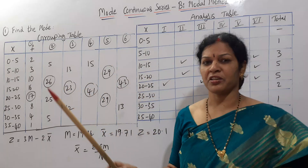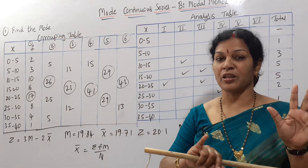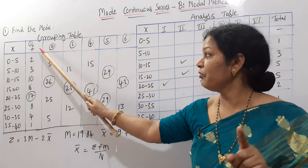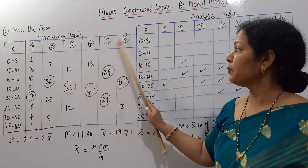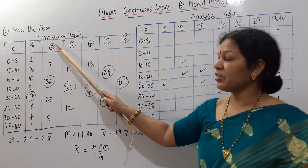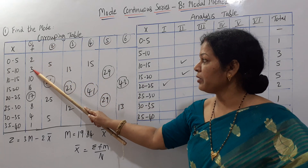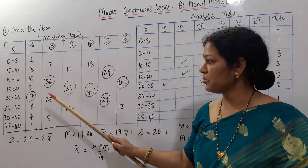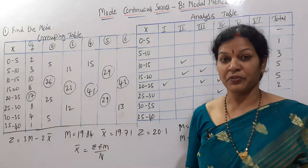We need to recap. The grouping table has only 6 columns. The frequency itself is the first column. We need to prepare columns 2, 3, 4, 5, and 6. In the second column, we add two numbers at a time: 2 plus 3 is 5; 10 plus 16 is 26; 17 plus 8 is 25; 4 plus 1 is 5. We need to adjust the frequency.